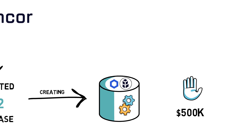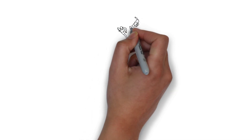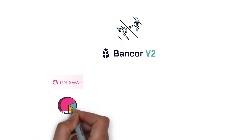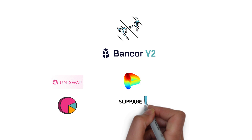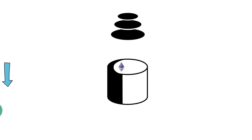Similarly to Bancor V1, Bancor V2 still relies on having BNT in each liquidity pool. So, for example, to trade from ETH to DAI you would have to trade through ETH/BNT and DAI/BNT pools. When it comes to competing with other DEXs, Bancor V2 can potentially steal some of Uniswap's volume, especially for the most popular trading pairs. It doesn't look like Bancor V2 would be a competitor to Curve, as Curve still provides lower slippage for stable assets and it's impossible to create a pool such as USDC/USDT in Bancor V2. Also, V2 pools are limited to only two assets, so Balancer with multiple assets in one pool still provides a unique value proposition.